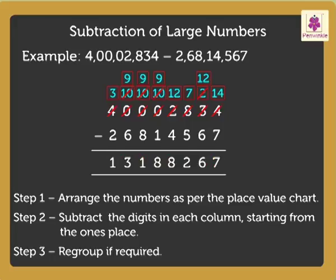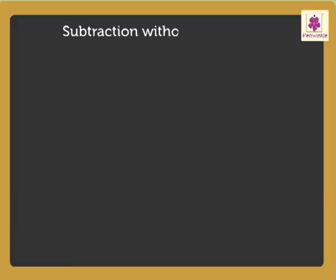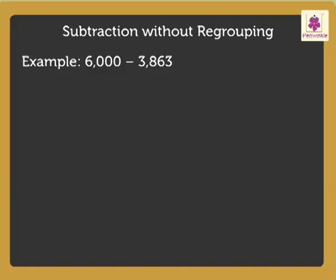Let us look at another example. Here, we will subtract without regrouping. Let us solve 6,000 minus 3,863. To find the difference of these numbers without regrouping, we will first reduce both the minuend and the subtrahend by 1, and then subtract.